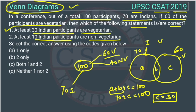Since c is 30 and the total vegetarians are 60, b equals 60 minus 30, so b equals 30. Now checking the statement — b represents Indian participants who are also vegetarian, and that is 30. So statement A, 'at least 30 Indian participants are vegetarian,' is correct.